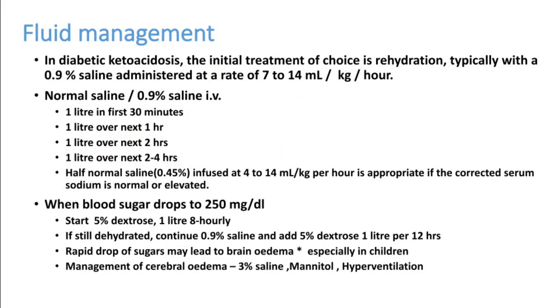Once DKA is diagnosed, the first thing to correct is fluid management. Start 0.9% saline at 7–14 mL/kg/hour — give 1 liter over 30 minutes, then 1 liter over the next 1 hour, 1 liter over the next 2 hours, 1 liter over the next 2–4 hours. Once the patient's blood sugar drops below 250 mg/dL, switch to dextrose saline.